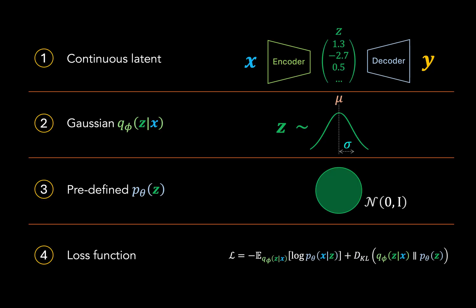So we basically have four essential elements here. We have a continuous latent encoding, a Gaussian sampling procedure in the latent space, a pre-specified latent prior distribution, and a loss function that penalizes on reconstruction and KL divergence. Now we're going to see how the VQVAE modifies all four.